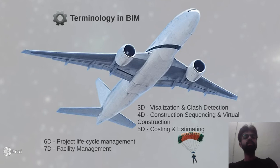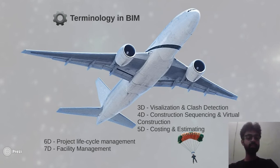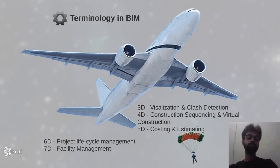There is basic terminology in BIM dimensions: 3D is visualization and clash detection; 4D refers to construction sequencing and virtual construction; 5D covers costing and estimating; 6D refers to project lifecycle management; and 7D, which is a very essential process in BIM terminology, is facility management.